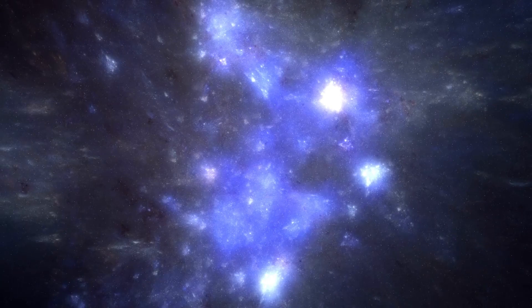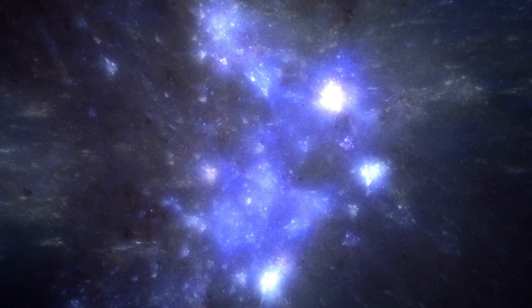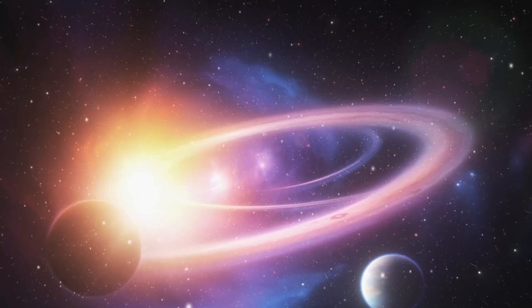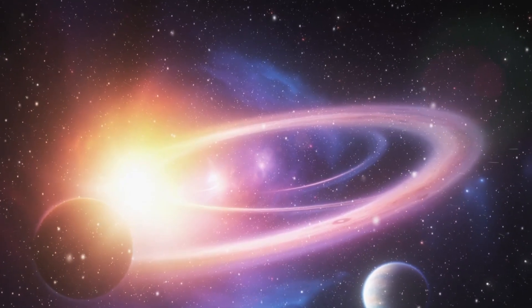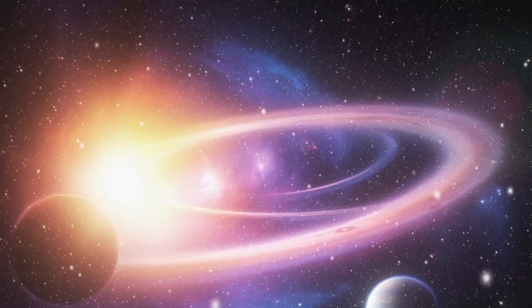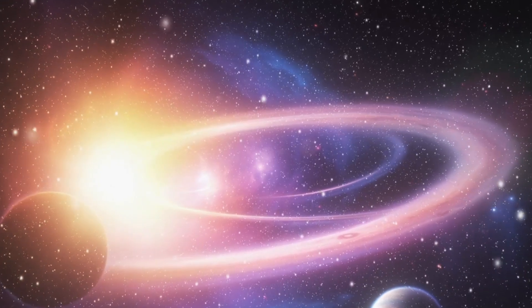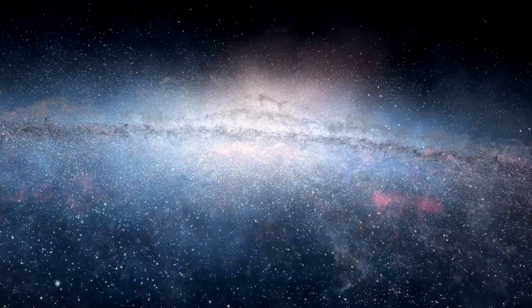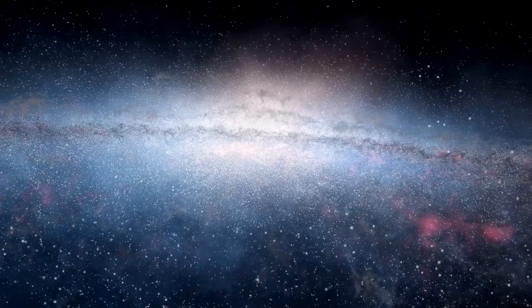However, once the stellar core is saturated with iron, fusion ceases, leading to a catastrophic collapse under the force of gravity. This collapse triggers a supernova explosion, expelling the outer layers of the star into space and leaving behind a dense core, a neutron star.